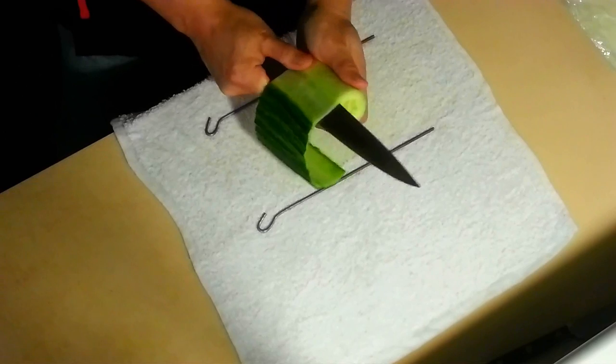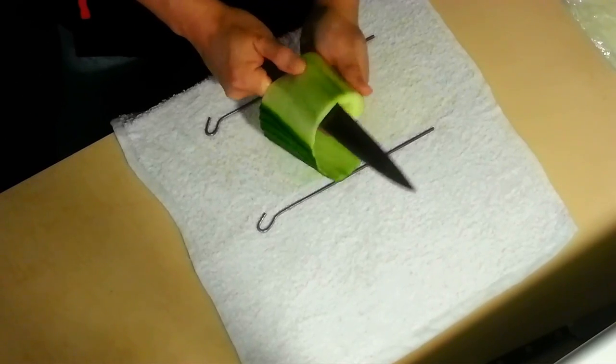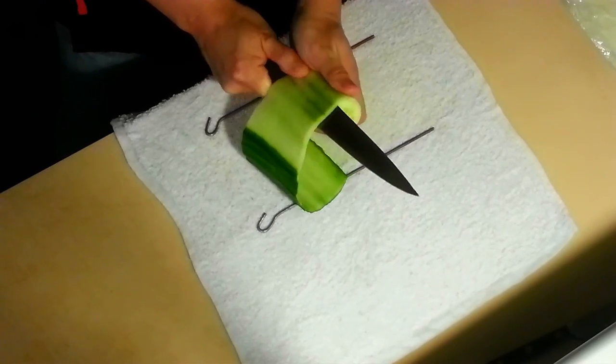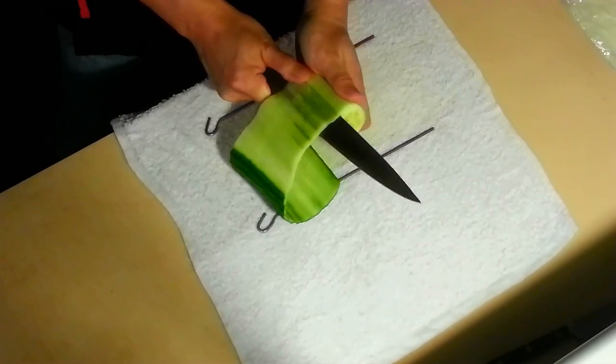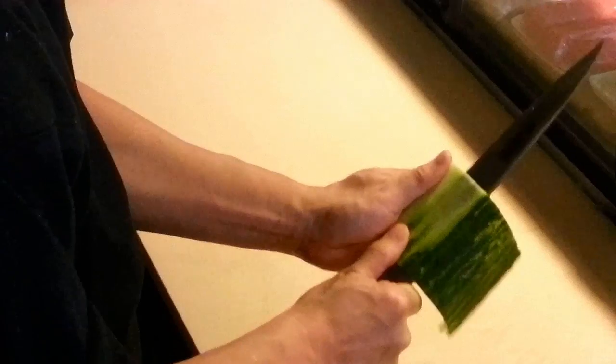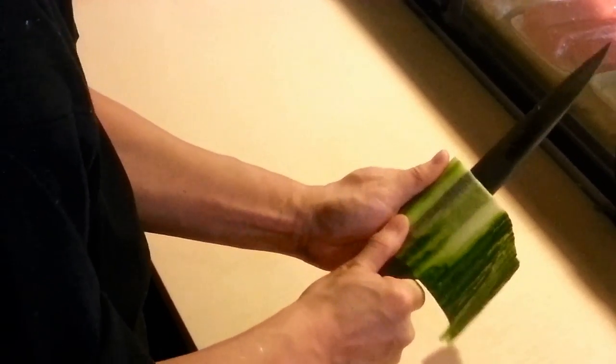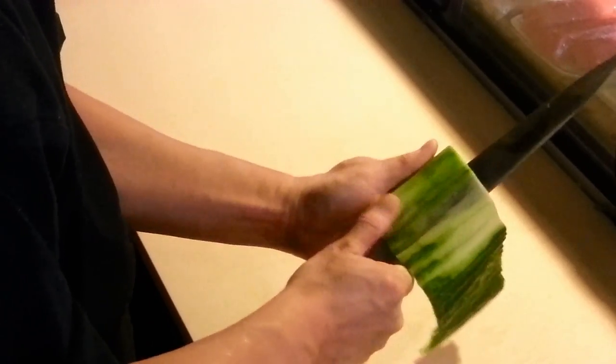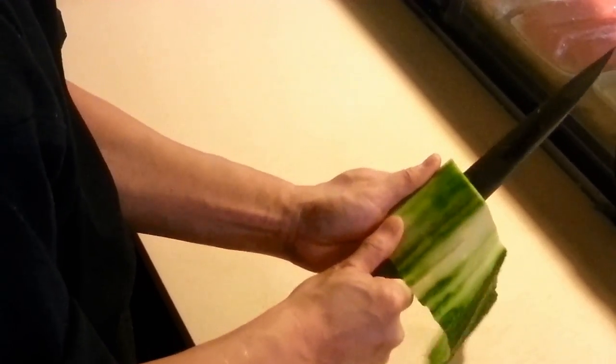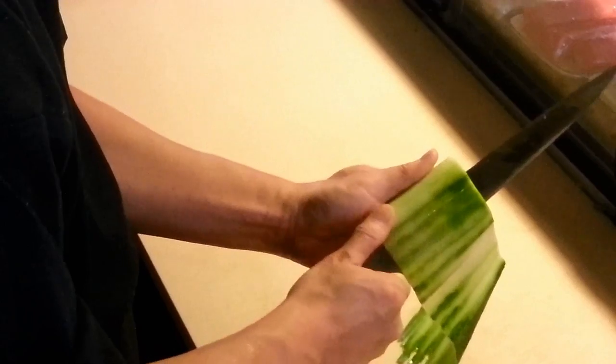People usually use the turn and cut method when peeling a cucumber. However, it takes too much time and it is a hard skill to master. I'm going to be showing you what I call the metal bridge method. It is at least five times faster and easier to learn than the original method.